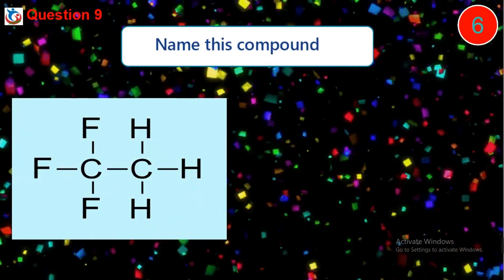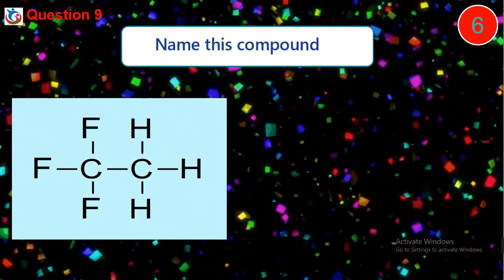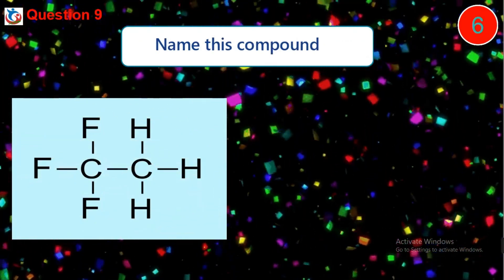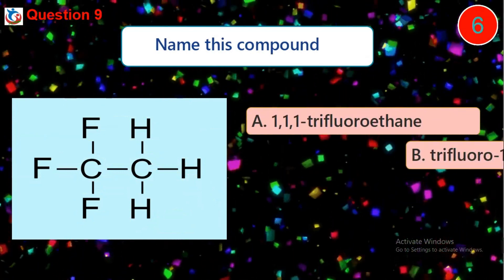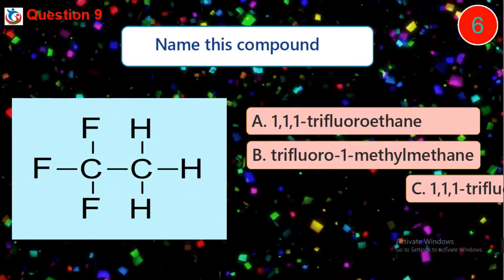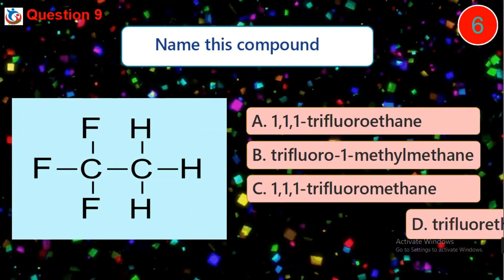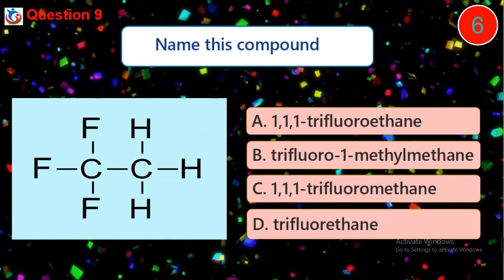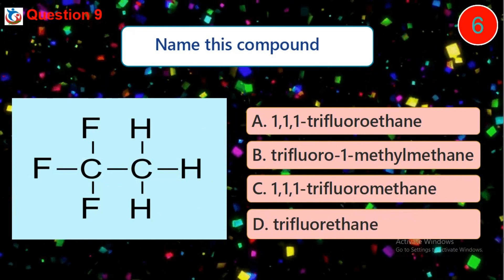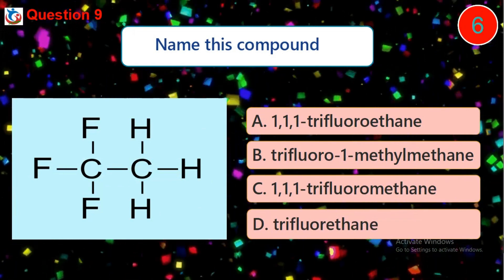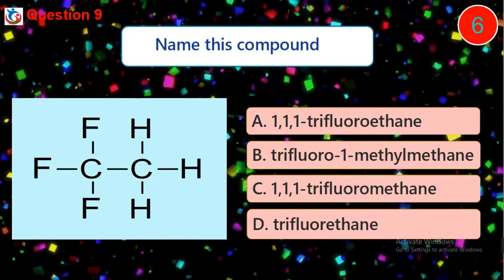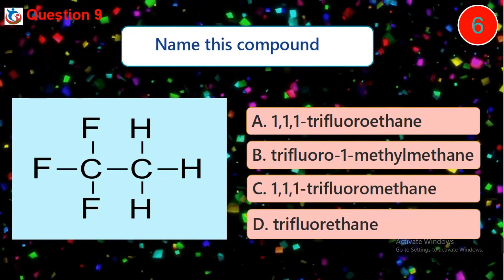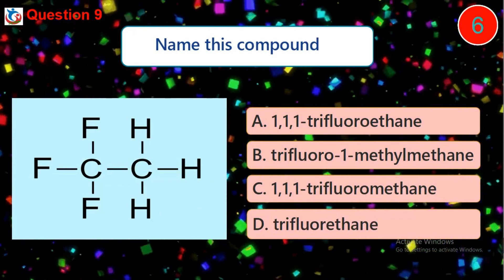Question 9. Name this compound. A. 1,1,1-trifluoroethane. B. 3-fluoro-1-methyl-methene. C. 1,1,1-trifluoromethene. D. 3-fluoroethane.